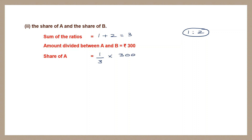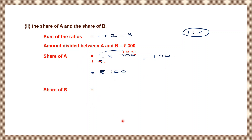We can cancel 3 and 300: 3 into 100 is 300, so 1 into 100 is 100. The share of A is 100 rupees. Now for the share of B: the total is 300 and A got 100, so we can also use the ratio method.